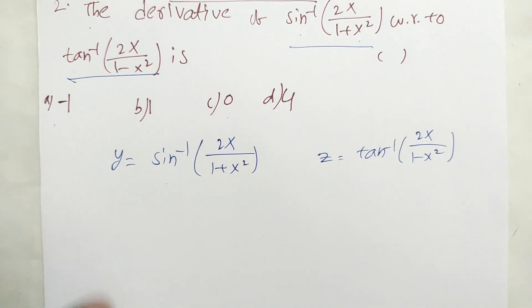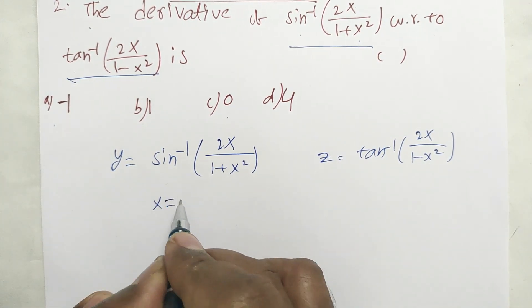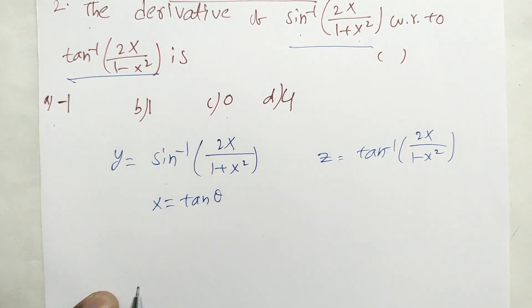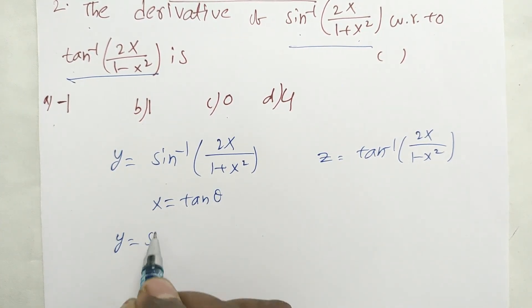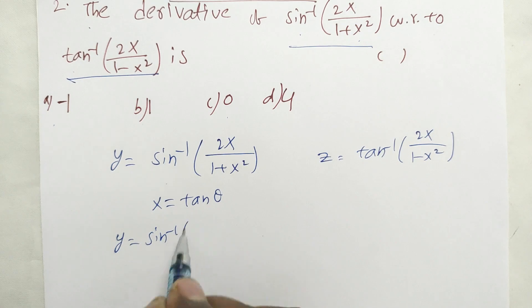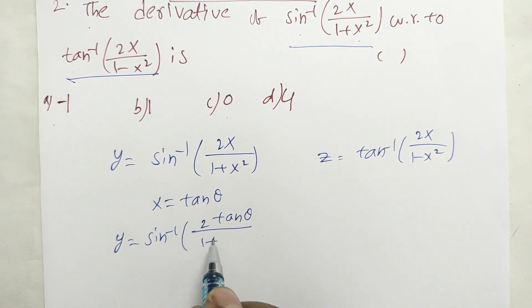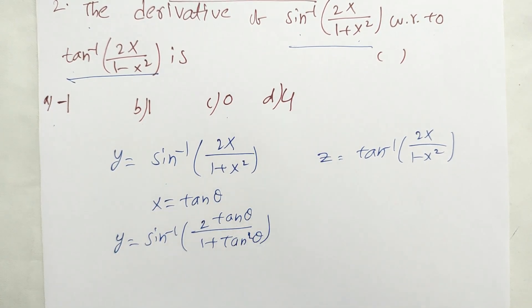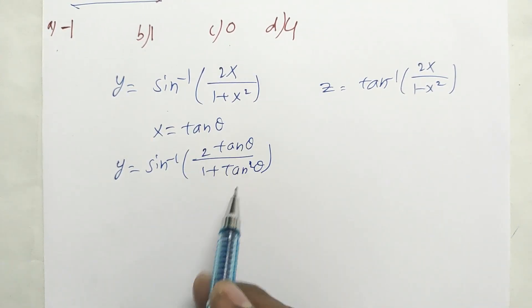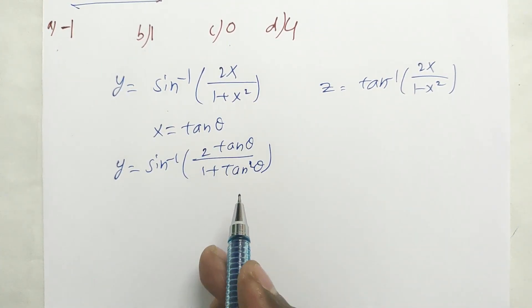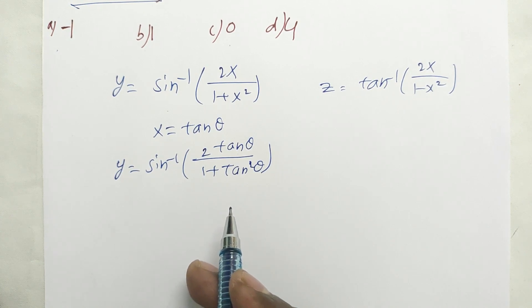Now, let x = tan θ. Then Y = sin⁻¹(2·tan θ/(1+tan²θ)). And 2·tan θ/(1+tan²θ) is nothing but sin 2θ.